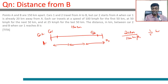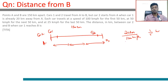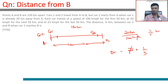On the last stretch, car two is traveling at 25 kilometers per hour, with 12 minutes — that is one-fifth of an hour — remaining. So the distance is 25 kilometers per hour × one-fifth = 5 kilometers.